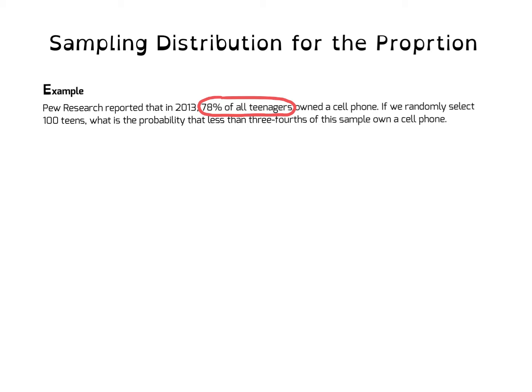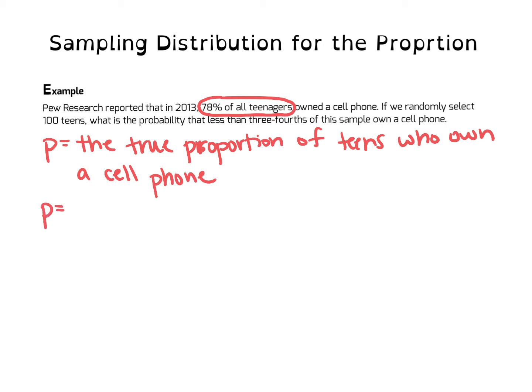And remember, when we talk about a population value, that is the true value. So, the first thing I want to do is I want to identify what the proportion is. My P here is that P is equal to the true proportion of teens who own a cell phone. That's where I start. I want to identify what is the true proportion or what is the true population value. And I know that P value itself, that P is equal to 78% or 0.78.